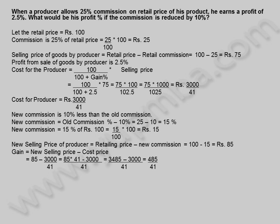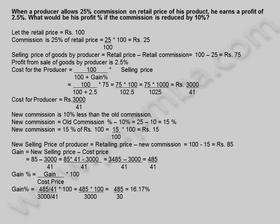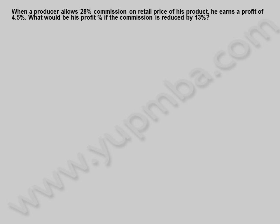Gain = new selling price minus cost price = 85 − 3000/41 = (3485 − 3000)/41 = 485/41. Gain percentage = (485/41) / (3000/41) × 100 = 485 × 100/3000 = 485/30 = 16.17%. The profit percentage if commission is reduced by 10% is 16.17%.